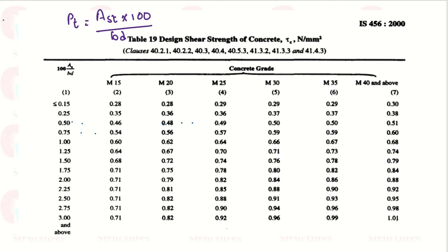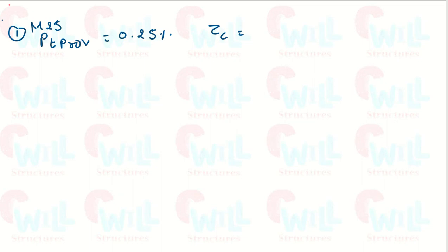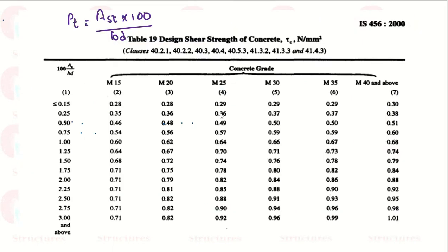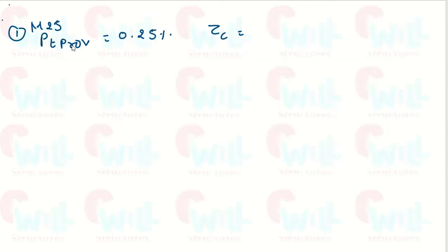Let's see how to determine the value of tau c. Assume we are using grade M25 for an RC element where PT provided is 0.25%. What will be the value of tau c? Looking at the M25 column in the table, for PT = 0.25, the value is 0.36 Newton per mm².